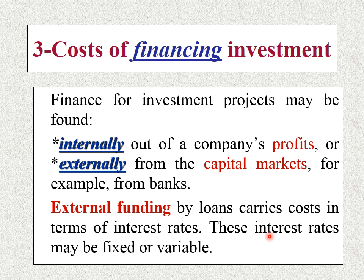تمويل مليون جنيه كلفني مثلاً مية وخمسين ألف جنيه فائدة للبنك، وقد تكون الفائدة متغيرة على حسب نوع القرض. أما لو التمويل من البورصة، فالمساهمون يشترون أسهماً وتأخذ الفلوس وتبدأ مشروعك، وفي المقابل تدفع للمساهمين أرباحاً. فتكلفة التمويل الخارجي من البورصة هي الأرباح التي تدفعها للمساهمين مقابل شرائهم للأسهم في شركتك.